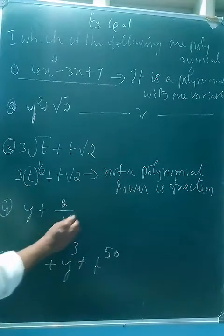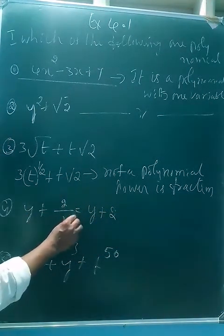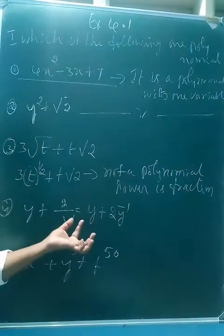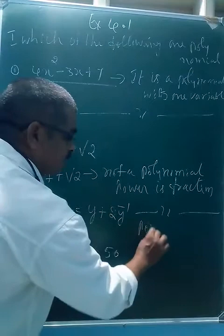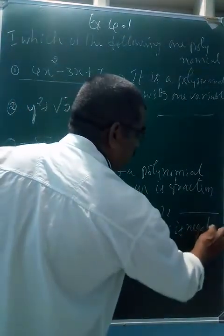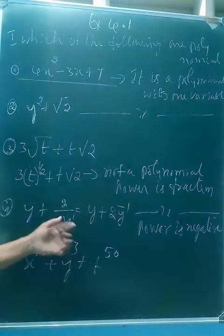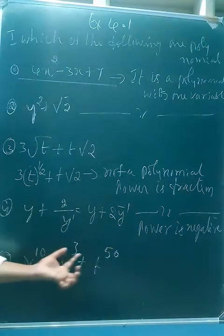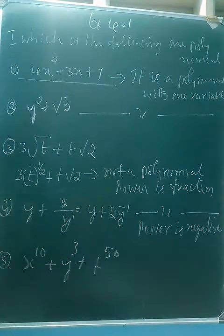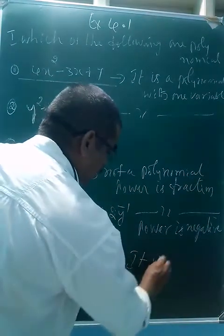For y + 2y + 2⁻¹: the power is negative. It is not a polynomial because the power is negative. The remaining example with one variable is a polynomial.